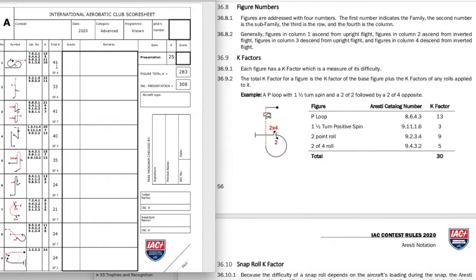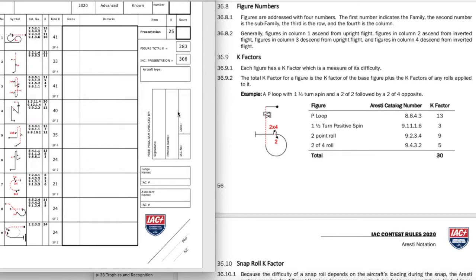You add up all the K values and you get your total K. And that's what the entire figure one is worth. So figure one is worth 41 points of that 283. I'm not going to sit here and do math for you, but you take 41 divided by 283 and that tells you the percentage of how much worth this figure is. So if you zero it, you now have 283 minus 41 points. So the idea is, is that the higher the K, the more difficult the figure.